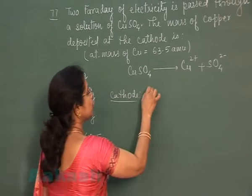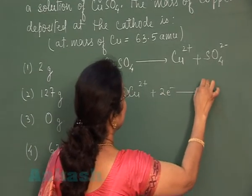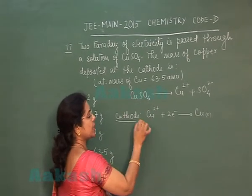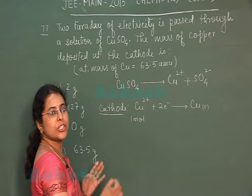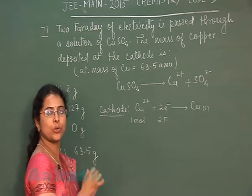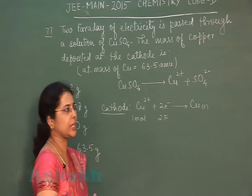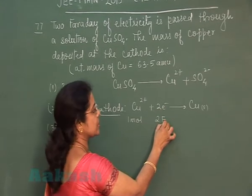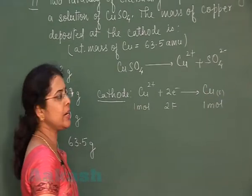The cathodic reaction is: Cu²⁺ + 2e⁻ → Cu(s). In this equation, 1 mole copper ion accepts 2 mole electrons. The charge carried by 2 mole electrons is equal to 2 Faraday, which is 2 × 96500 Coulombs. Since the charge passed is 2 Faraday, 1 mole copper ion will be reduced to 1 mole copper solid.